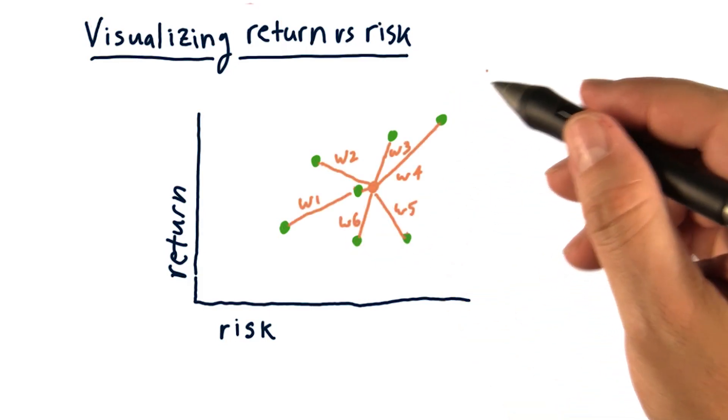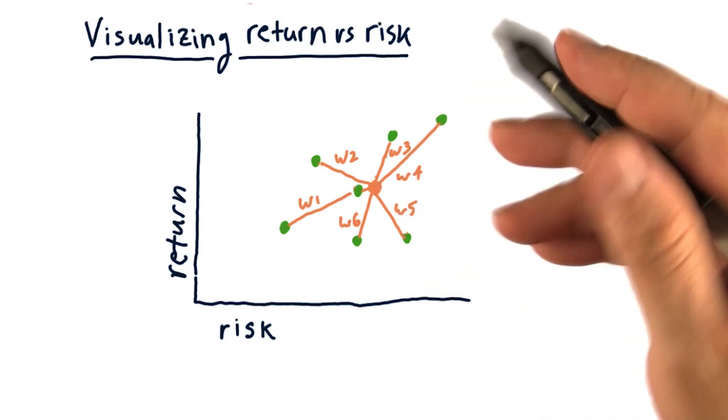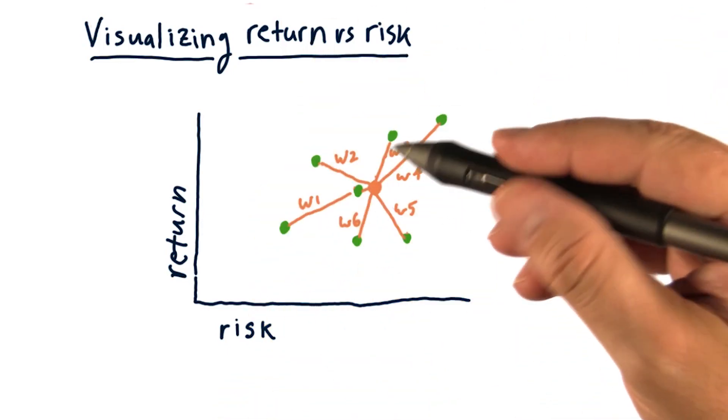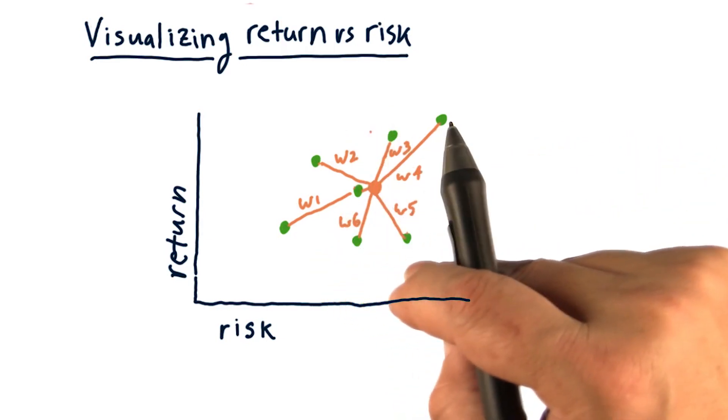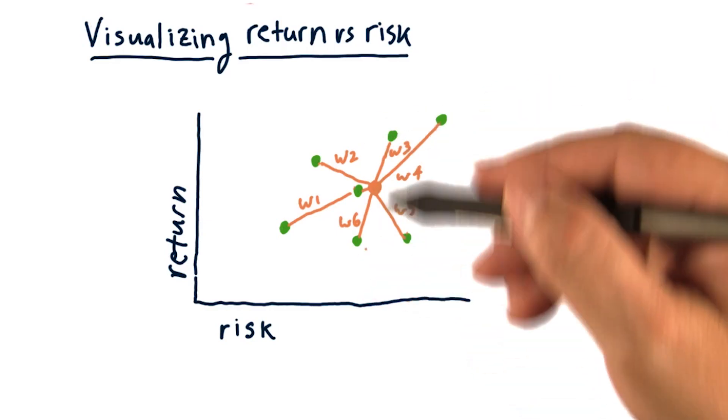Each stock has a weight, and when combined all together, we end up with a portfolio that has properties of each of the stocks. It's typically got a risk somewhere in the middle there and a return somewhere in the middle.